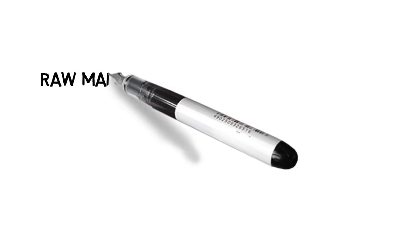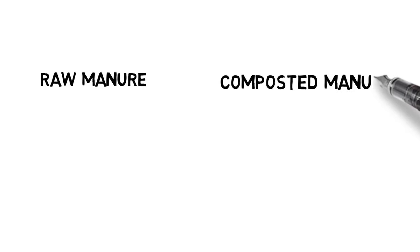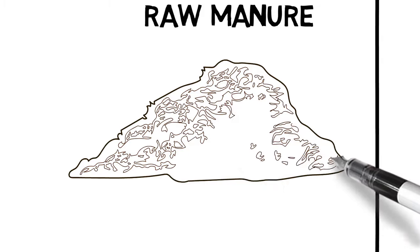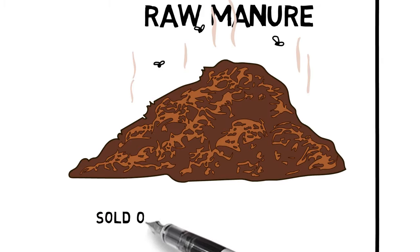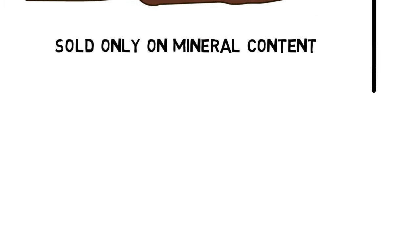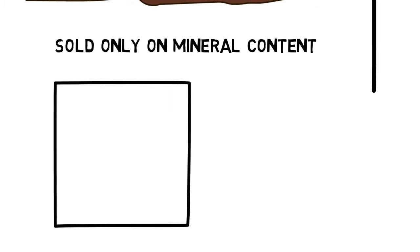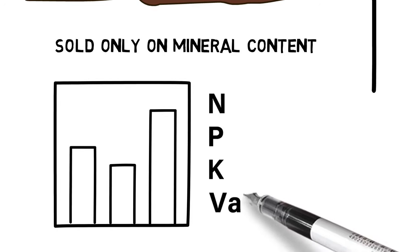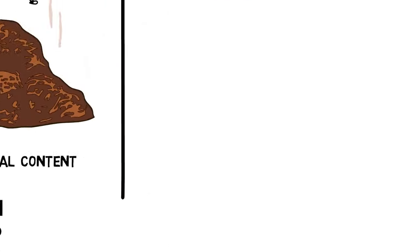The difference between raw manure and composted manure is that raw manure is sold on a mineral content only, on a lab assay that indicates N, P, and K values.